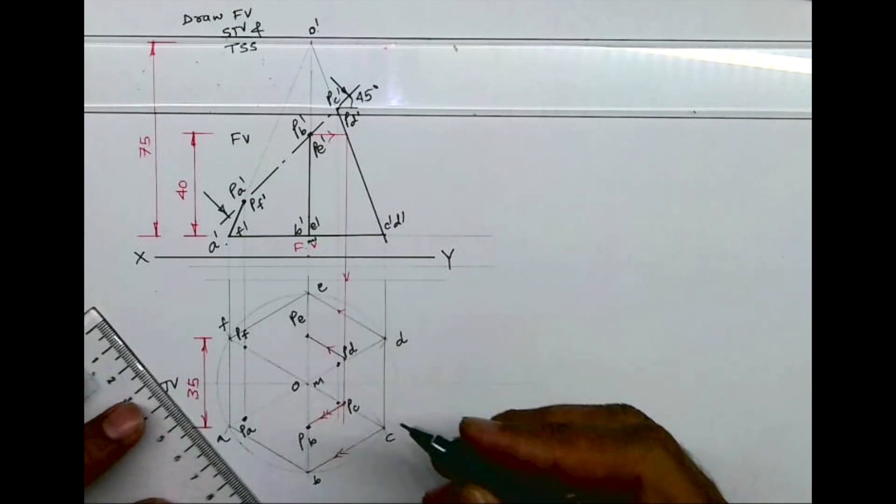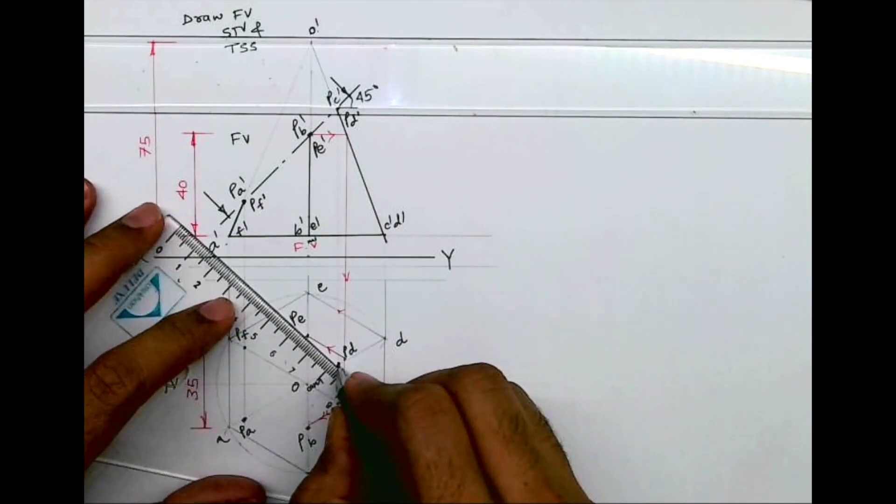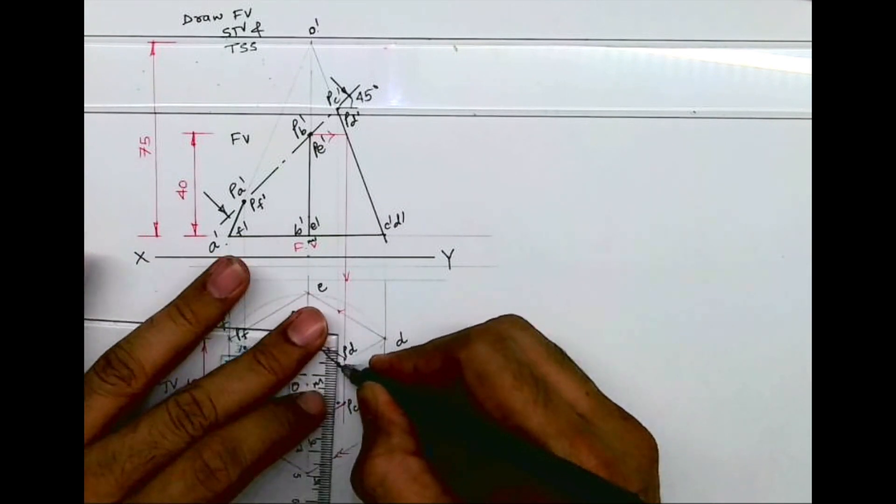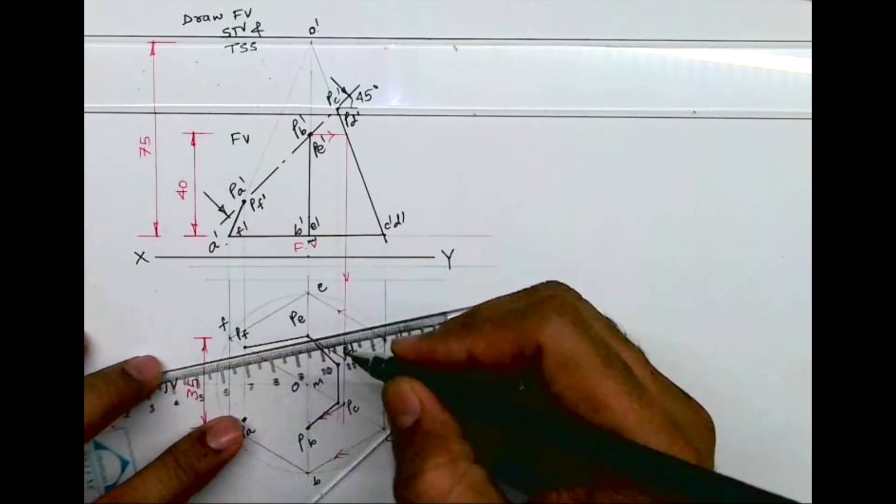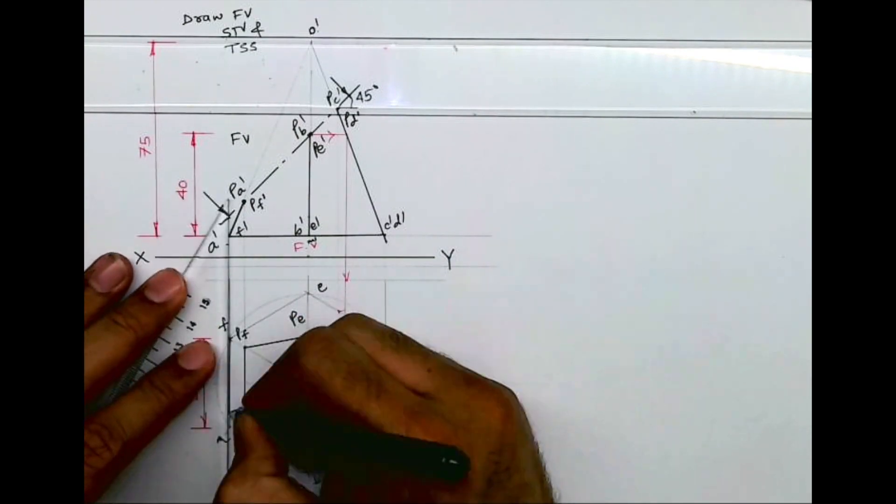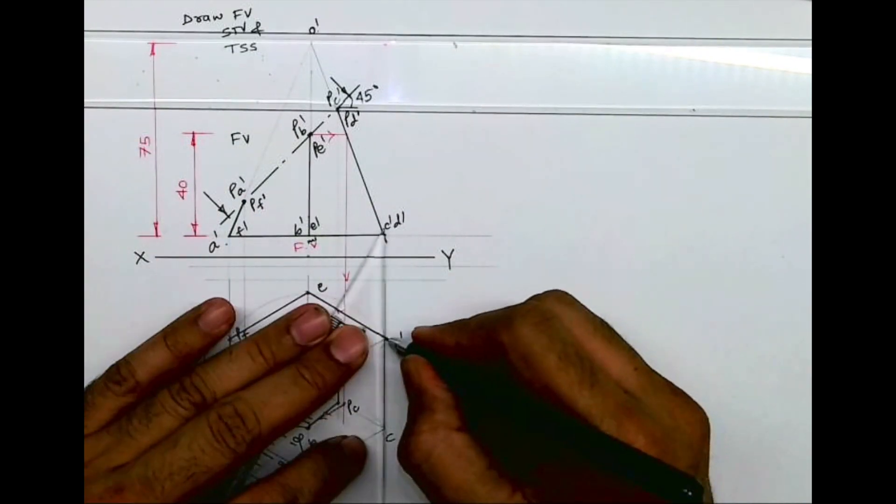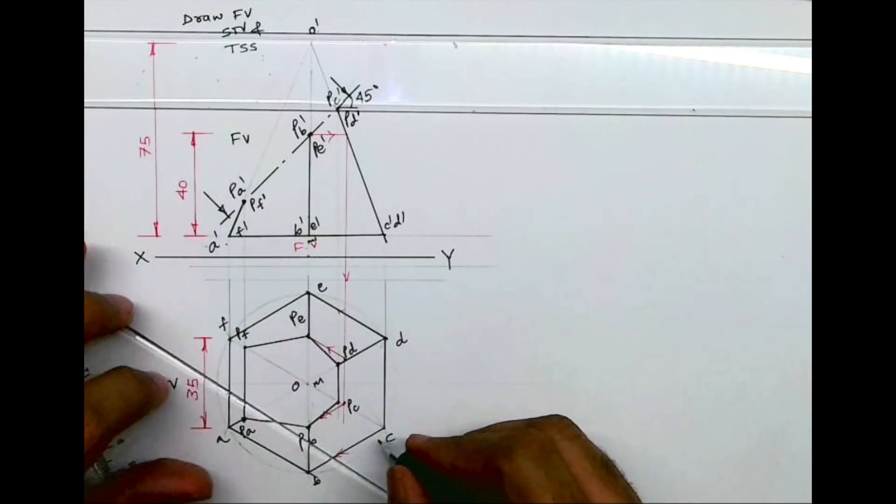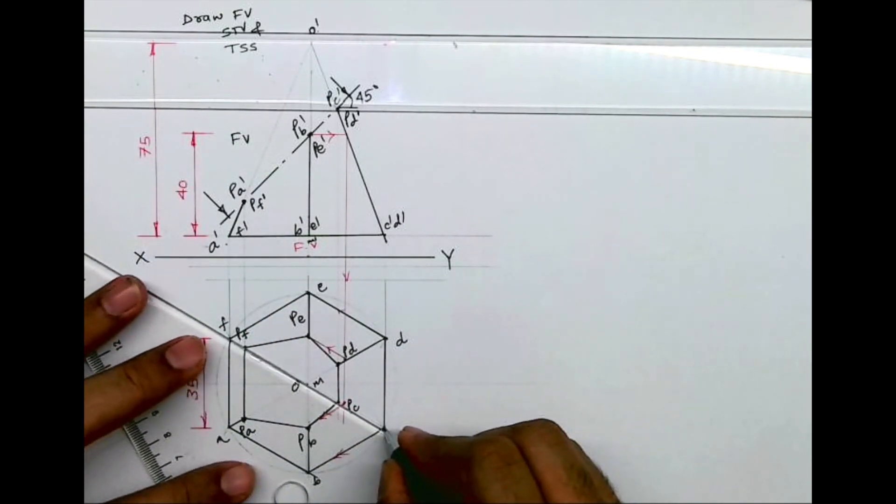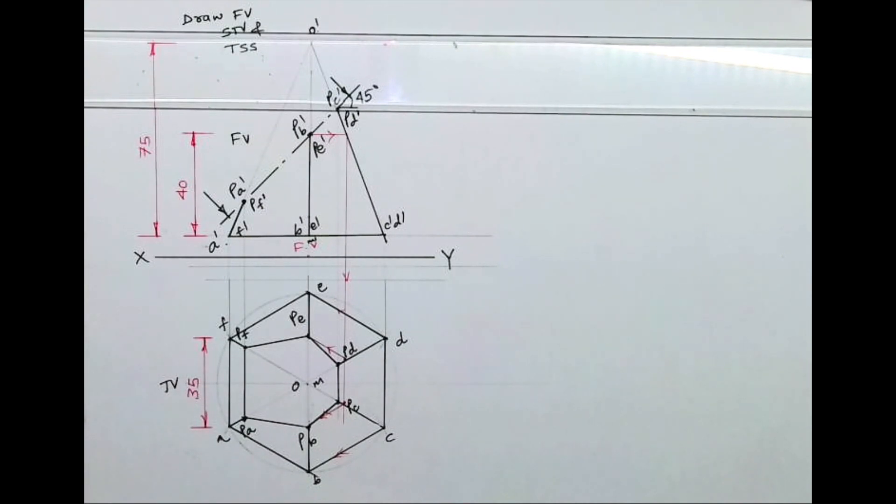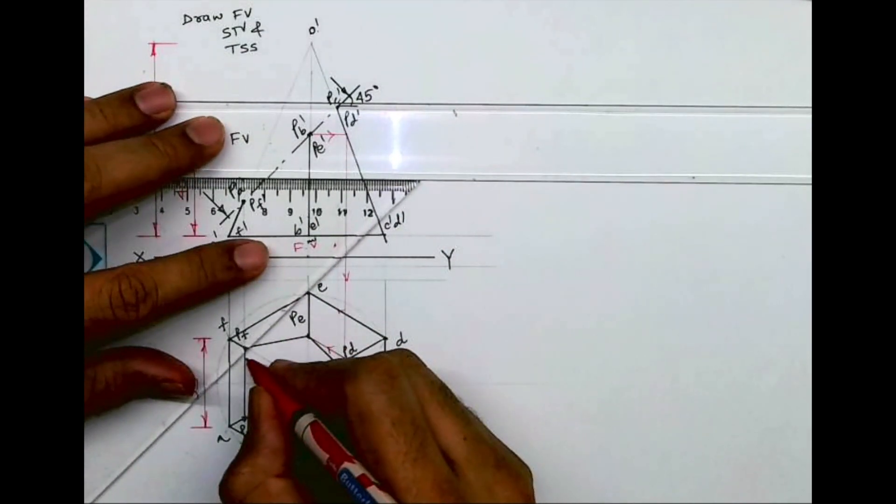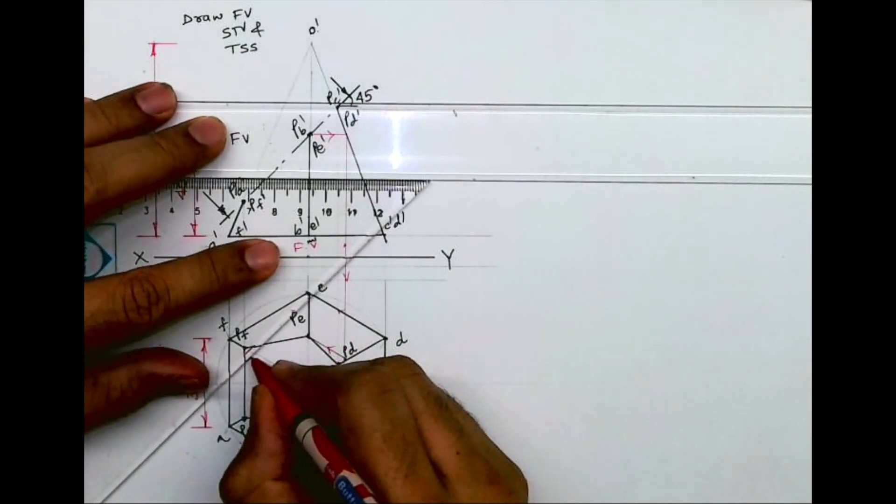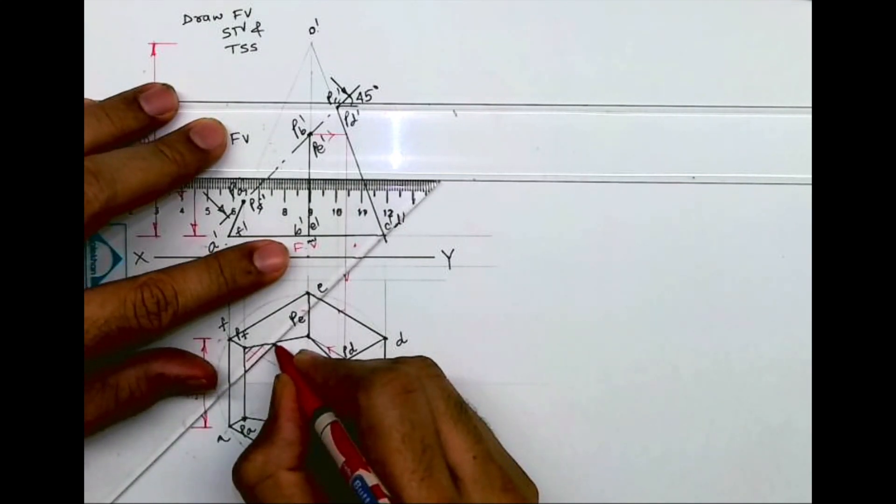So we got all six points. Now we can join these in top view, and we'll get sectional top view. We'll get all these points down, then we'll draw hatching. So this is the sectional top view.